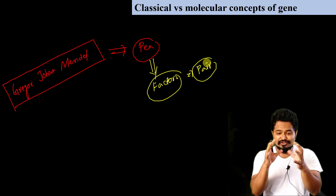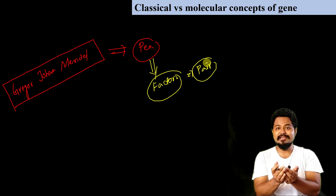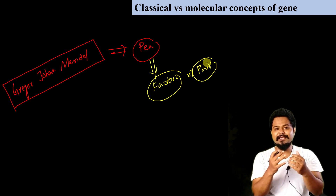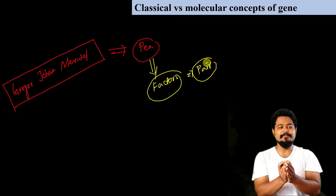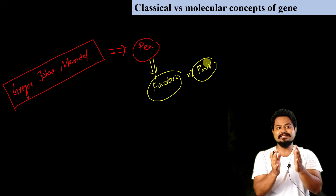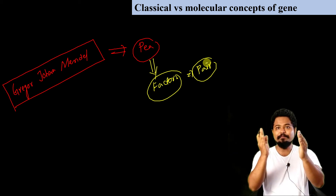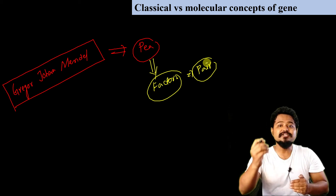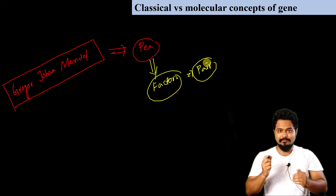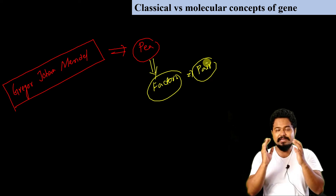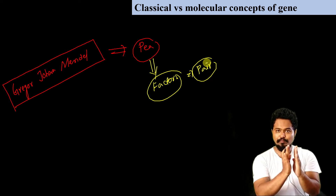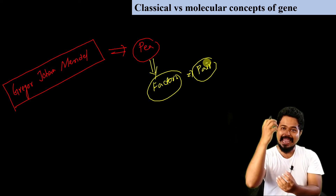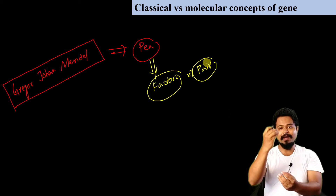This is the main concept of Mendel — related to structure: wrinkle, round, colors, cedar, green, yellow, etc. If you have the factors, you have them passed across generations.